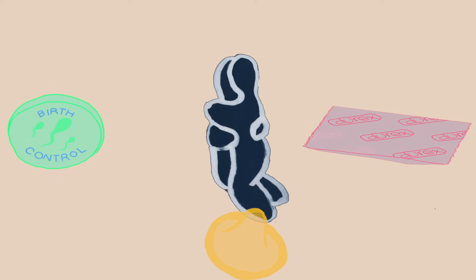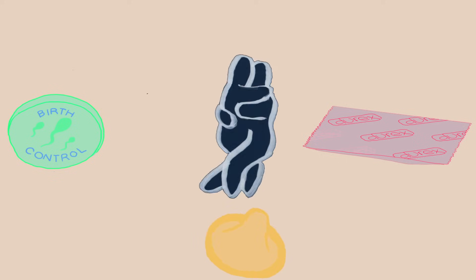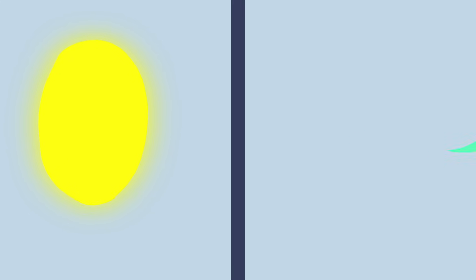Sperm are drawn to the egg like a moth to a flame. Now, if you don't want to become pregnant when you have sex, there are a lot of simple ways to stop it from happening. We call this contraception.